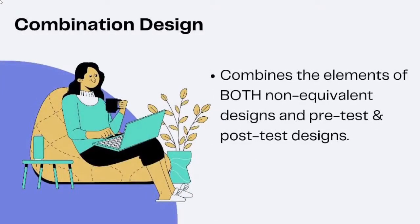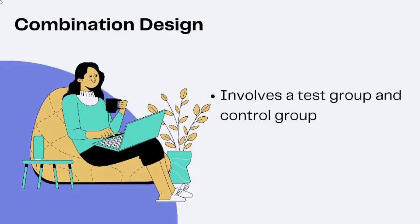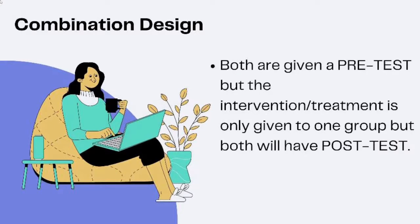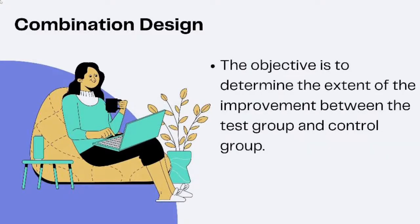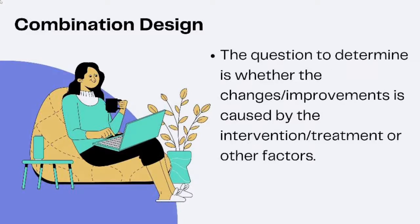Lastly, the combination design combines the elements of both non-equivalent designs and pre-test and post-test designs. This design involves a test group and a control group. Both groups are given a pre-test, but the treatment is only given to one group, while both will have post-tests. The objective is to determine the extent of improvement between the test group and control group, and the main question is whether the changes are caused by the treatment or other factors.